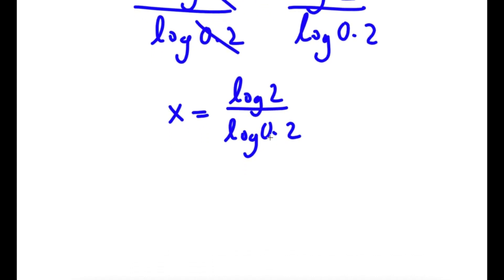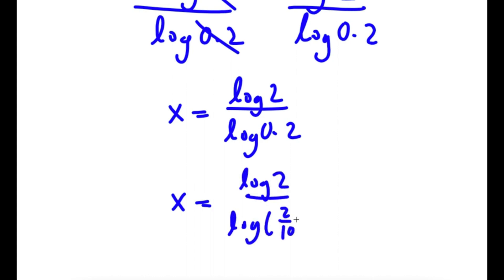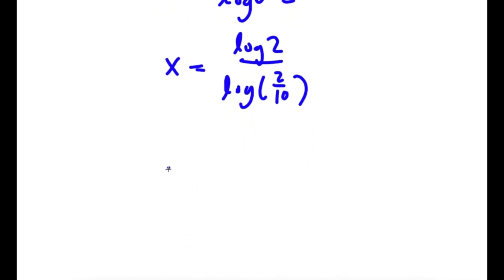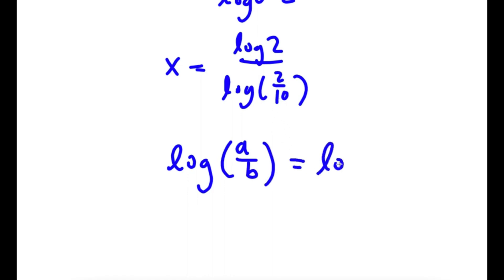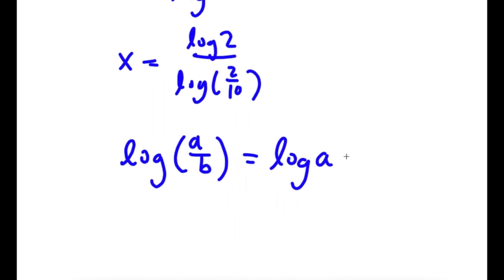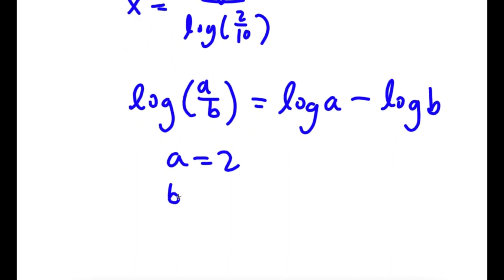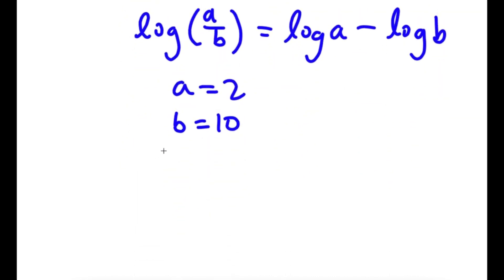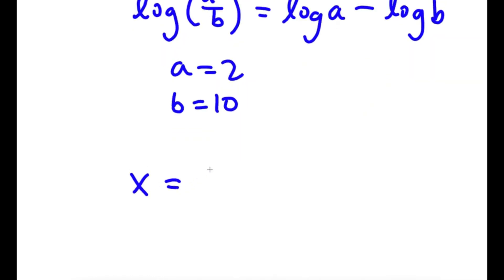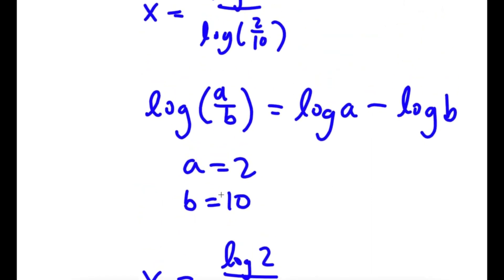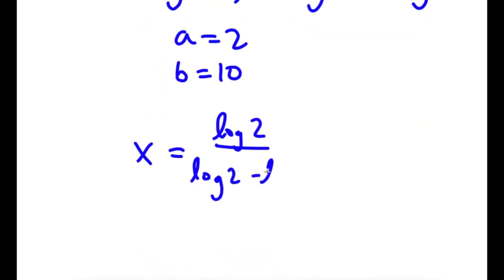Now, log 0.2 is the same thing as log of 2 over 10. And if I have something in the form log a over b, this is simply equal to log a minus log b. So in this case, a is 2 and b is 10. So I can rewrite this as x is equal to log 2 over log 2 minus log 10.